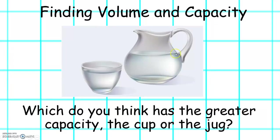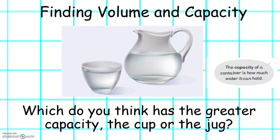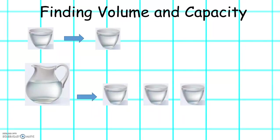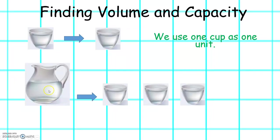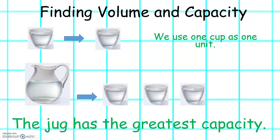Now have a little look at the jug and the cup. Which do you think has the greater capacity — the cup or the jug? The capacity of a container is how much water it can hold. We will use one cup as one unit, so the cup is one unit. And the jug is one, two, three units. So the jug has the greatest capacity.